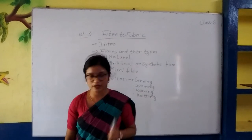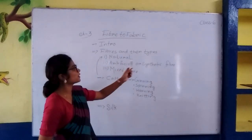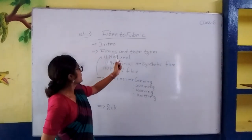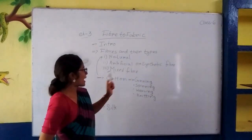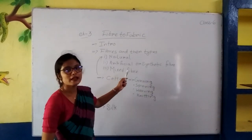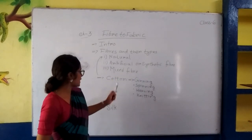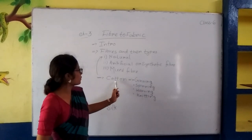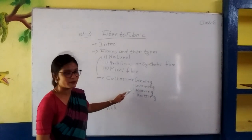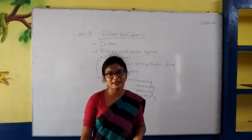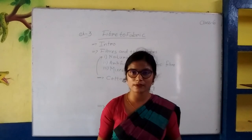Today in this chapter, you learned about fiber to fabric. The types are: natural fiber, artificial or synthetic fiber, and mixed fiber. Examples of natural fiber are cotton, silk, and wool. Artificial fiber includes flat and linen. Mixed fiber examples are rayon. Cotton processing involves four steps. Silk is obtained from the silkworm. Please students, read this chapter very well. Thank you.